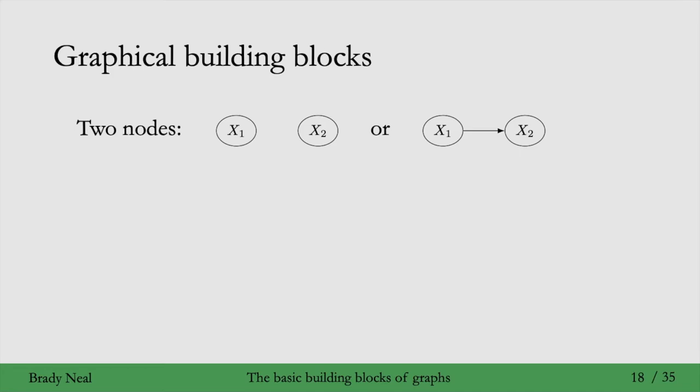And then if you were to take the graph on the right, the one with the edge between them, and try to add more edges and more variables to that graph, there's three ways that you could do it. Three ways that you can add another variable with an edge to it. If you're adding another variable without an edge, then it's simple. It's just the graph on the left here.